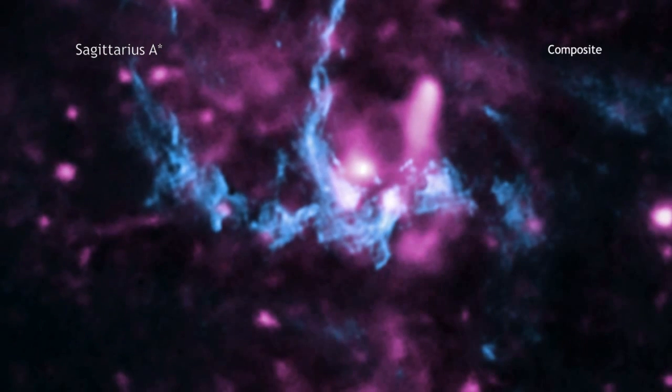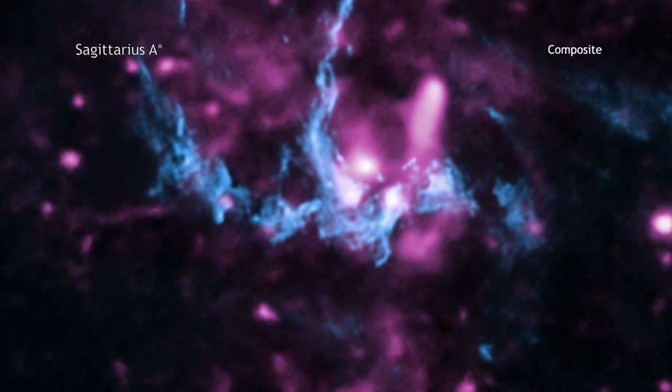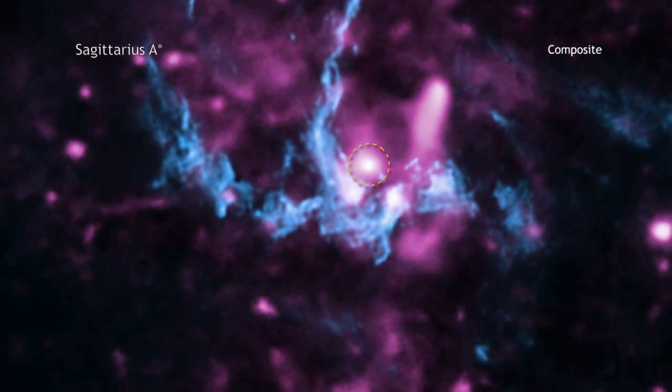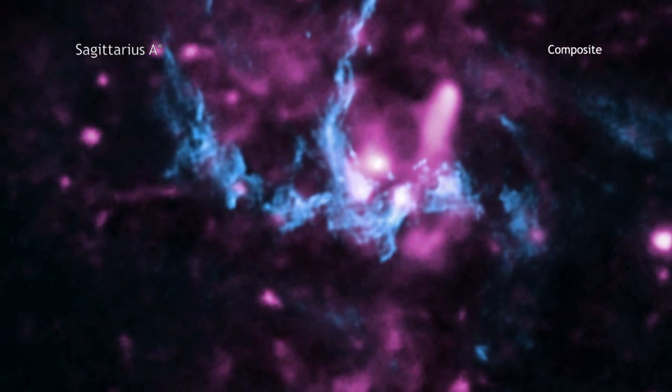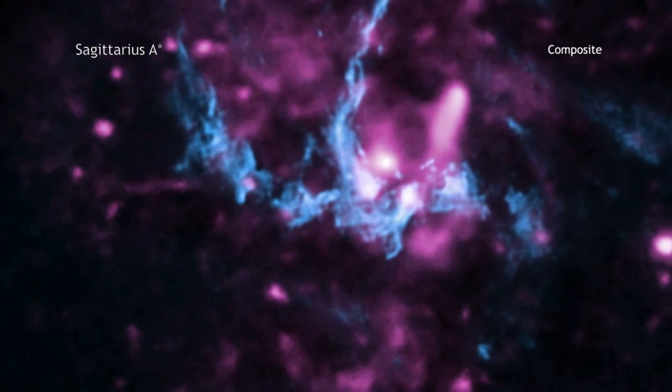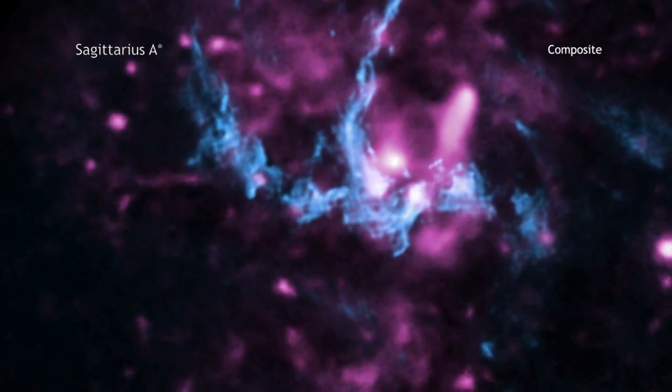Because of that, astronomers have been searching for decades for a jet from the Milky Way's black hole known as Sagittarius A star. Over the years, there have been several reports of hints of a jet from Sag A star, but none was conclusive.